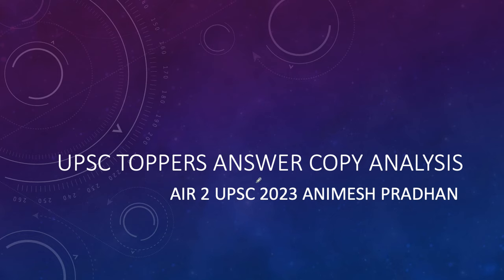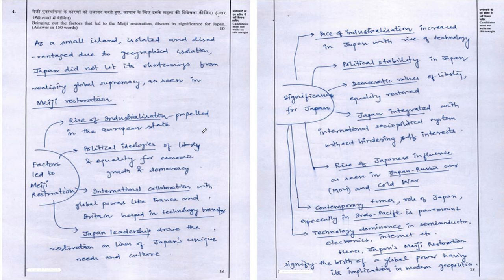Welcome to our channel. In today's UPSC Topper's answer copy analysis, we are going to discuss UPSC 2023 Topper, all-India rank 2, Animesh Pradhan. This question is picked from GS Paper 1, component of world history.